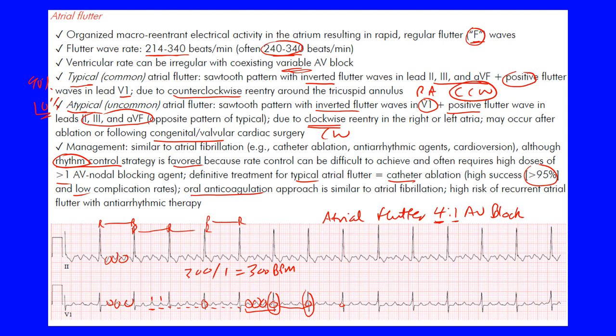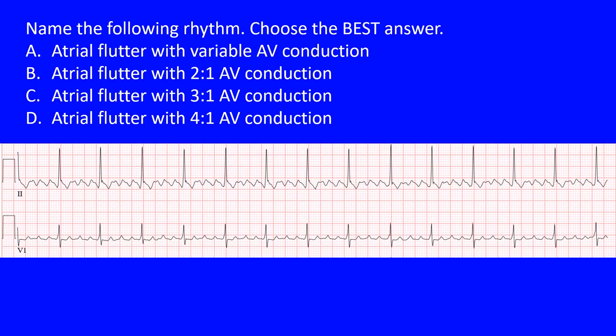That's atrial flutter in a nutshell — a quick overview. Now let's try a practice question. Name the following rhythm and choose the best answer. All answer choices involve atrial flutter, so it comes down to the conduction ratio: A) variable AV conduction, B) 2:1, C) 3:1, or D) 4:1 AV conduction. Pause the video, look at the ECG, then resume when you're ready.